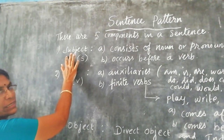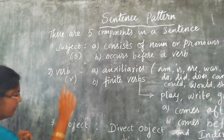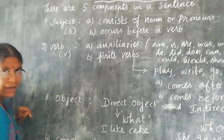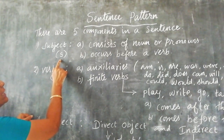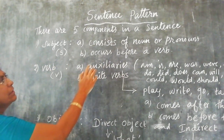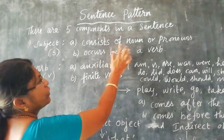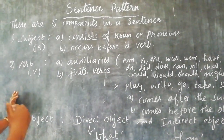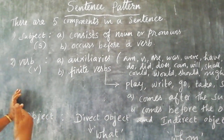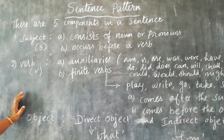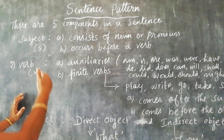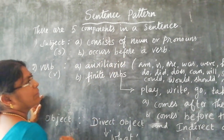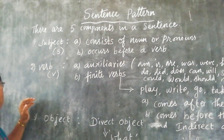The first one is subject. Subject consists of a noun or pronoun. You can say any noun or pronoun at the beginning of the sentence — it is called a subject. Usually, it comes before a verb.